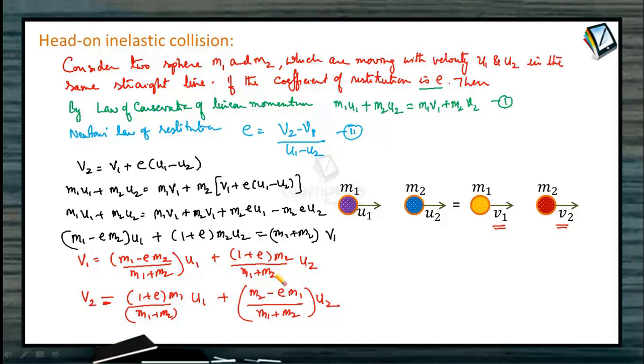Correct? This will be the more general formulas which we have derived. Suppose e is equal to 1, then it becomes elastic collision. If e is equal to 0, perfect inelastic collision. If the value of e is given to you in a numerical problem, so v1 will be m1 minus e m2 by m1 plus m2 into u2. If e is 1, m1 minus m2 by m1 plus m2 into u1. Like that we have to substitute the values.